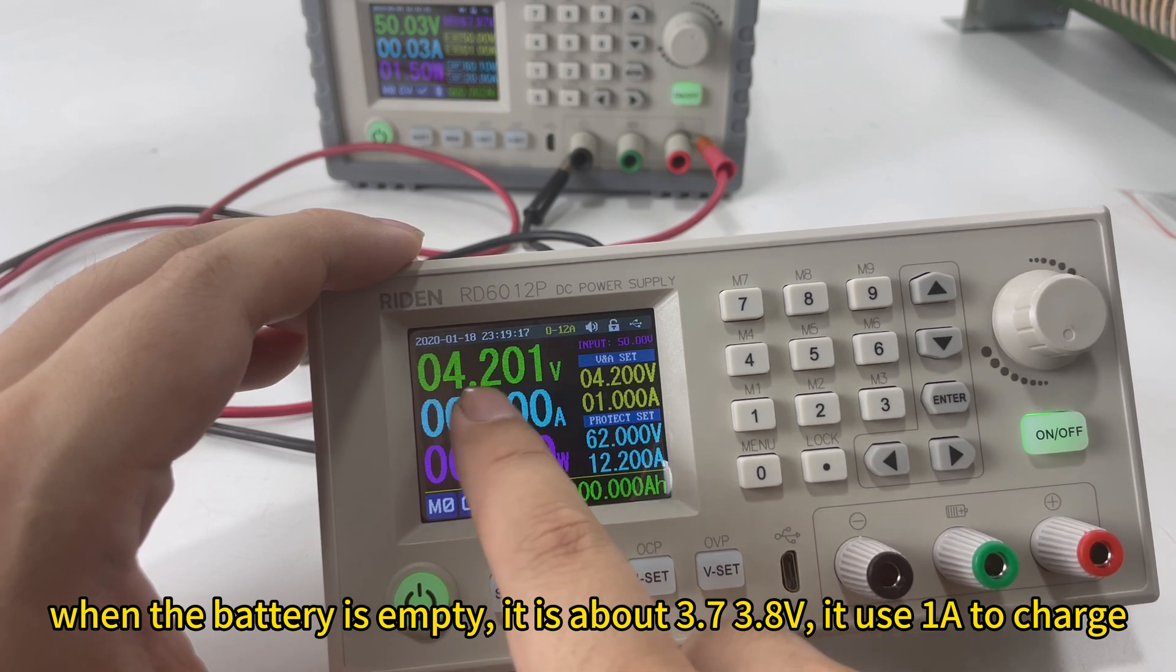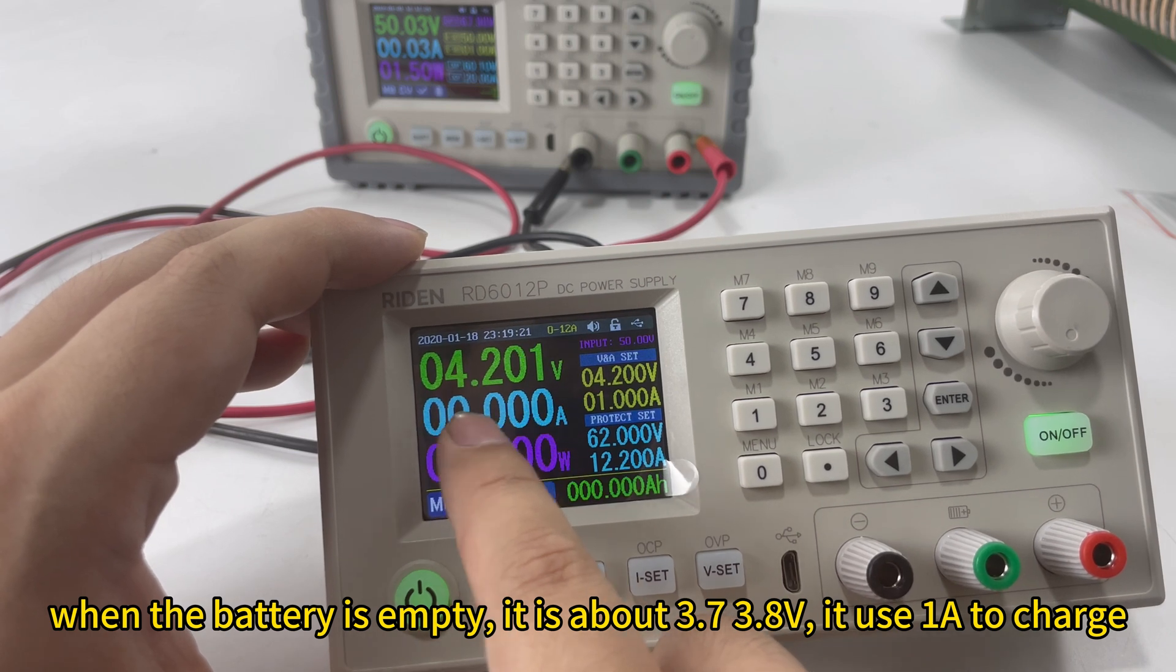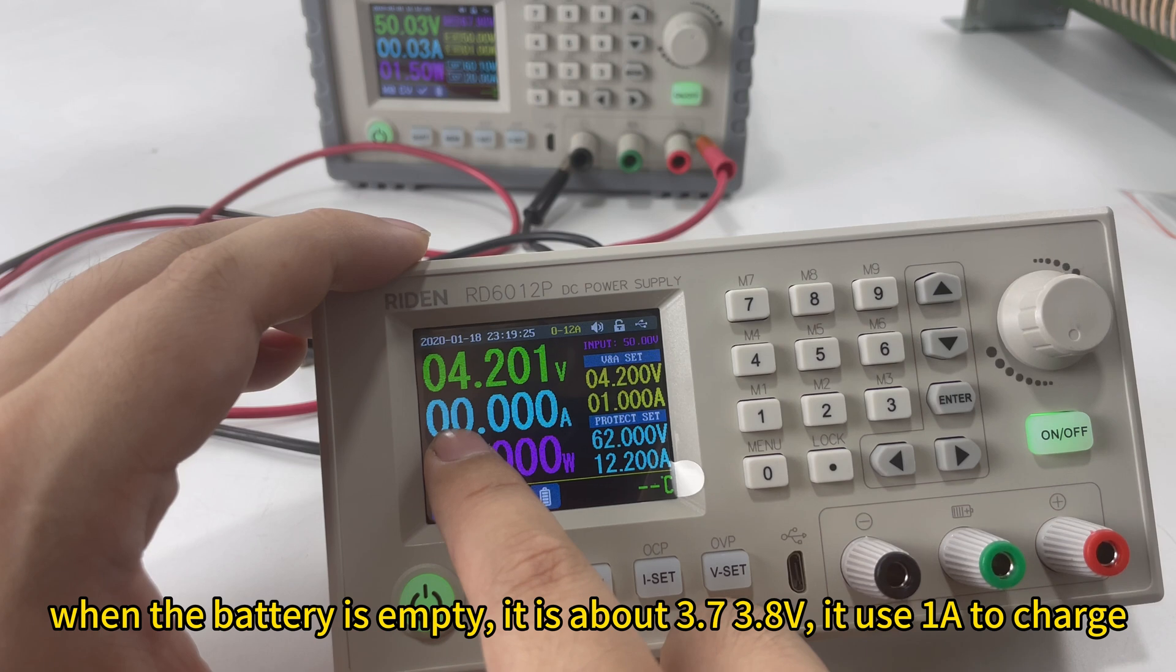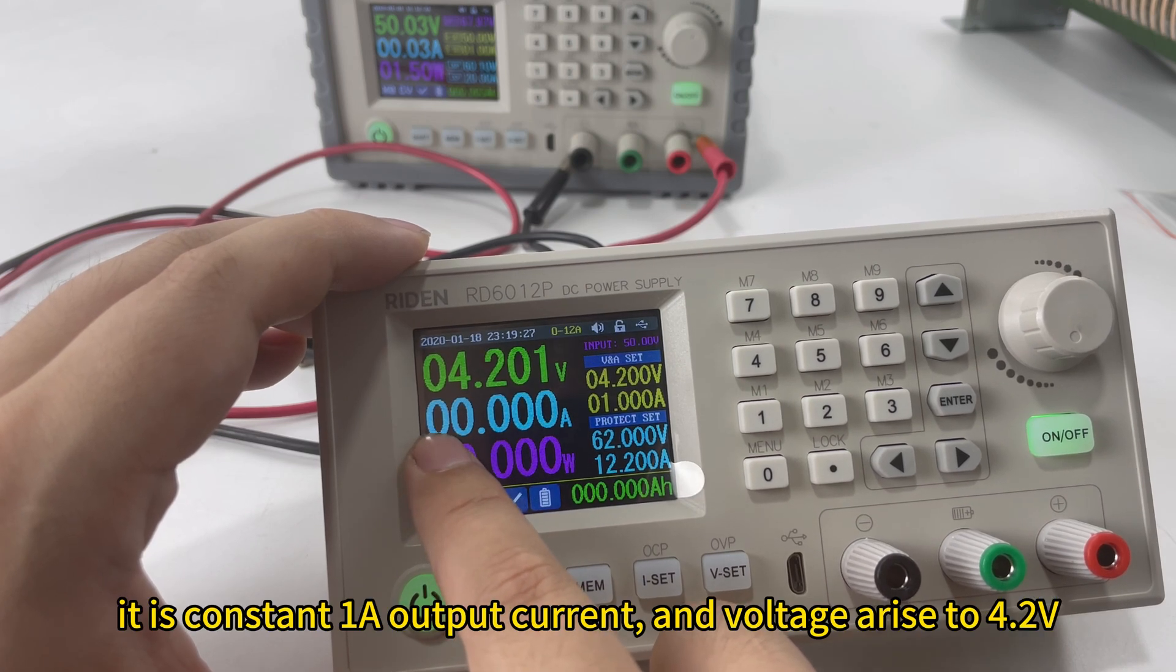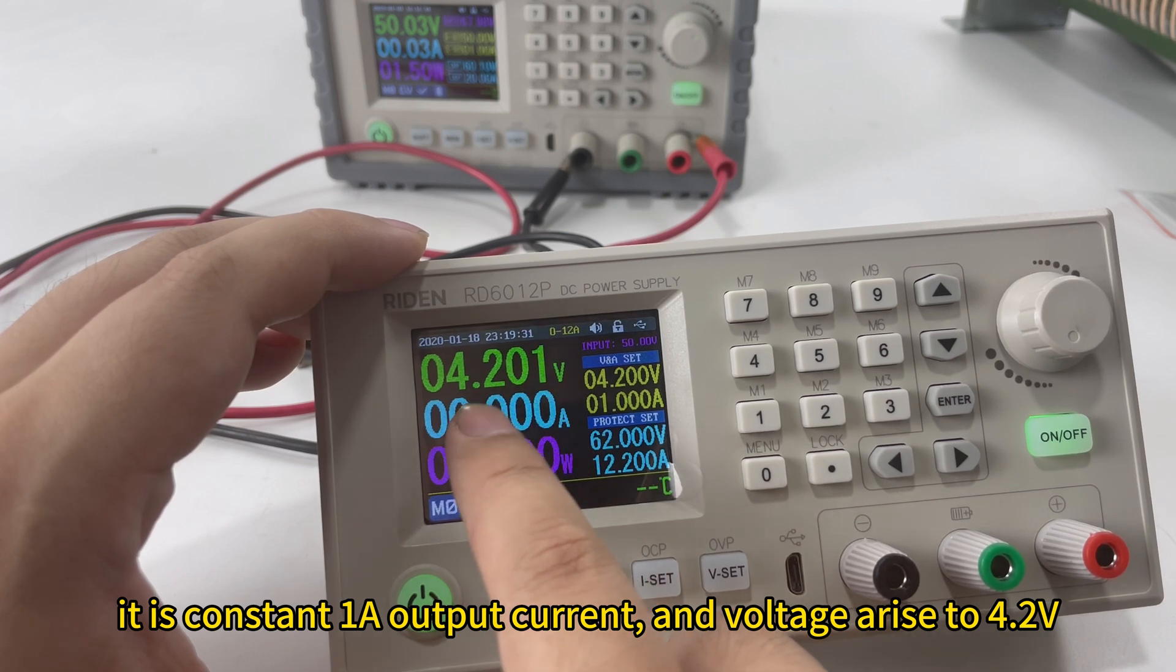When the battery is empty, it should be about 3.8 to 3.7V and the current is 1A. The current will be constant and the voltage will be increasing.